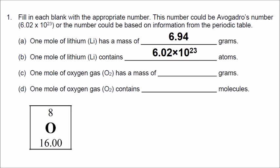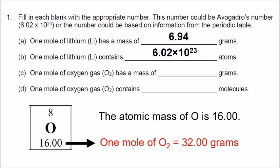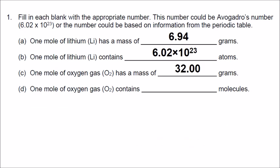In part C, oxygen has an atomic mass of 16, but they want the number of grams in one mole of oxygen gas, which is diatomic — that's O2. So it's not 16, but rather 16 times 2. There are 32 grams in one mole of oxygen. And then in part D, how many molecules of oxygen are in one mole? That's Avogadro's number: 6.02 times 10 to the 23rd molecules of oxygen in one mole.